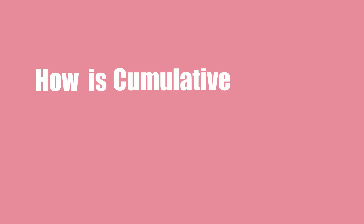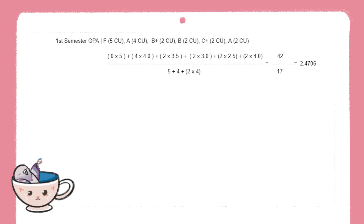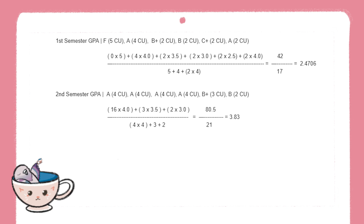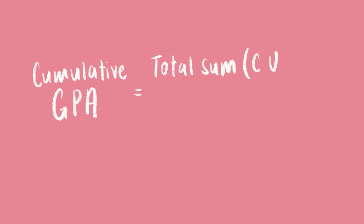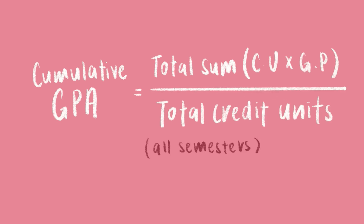Now, how is cumulative GPA calculated? Cumulative GPA is the total GPA across all semesters taken so far. The formula is similar to the semester GPA: the sum of grade points times credit units divided by the sum of credit units for all modules examined, including failed modules, up to and including the current semester.